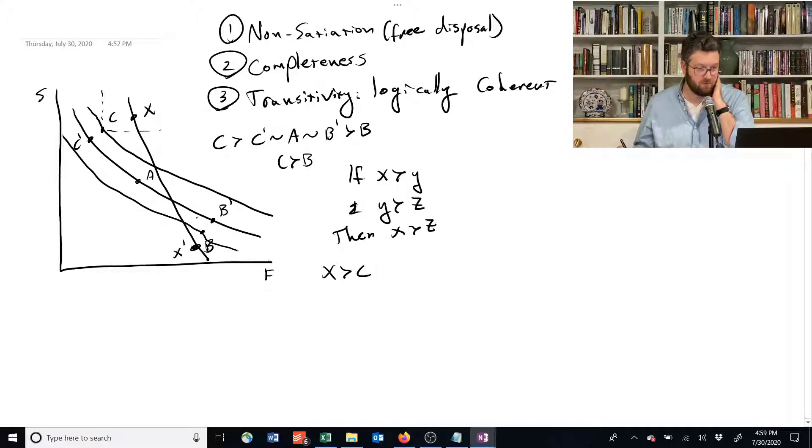And since b has more than x prime, we know that b is preferred to x prime. But I've said that x and x prime are indifferent because they're on the same indifference curve, and this is violating our transitivity rule.